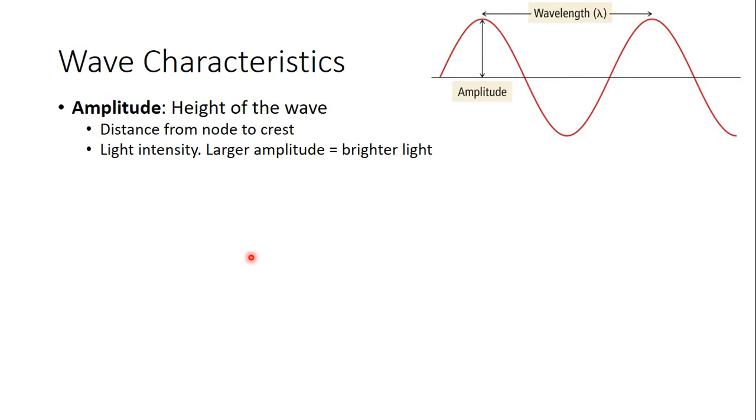Before we go further, let's look at what makes a wave a wave. First, waves have amplitude. That is, the distance from the node to crest, or basically just how big your wave is. And really, the brighter a light, the bigger the amplitude.